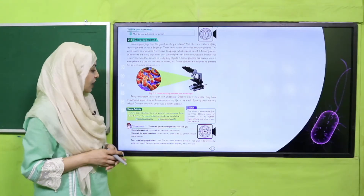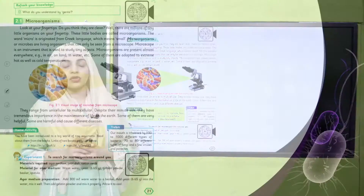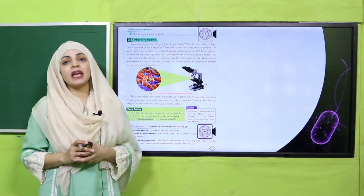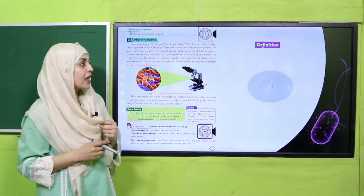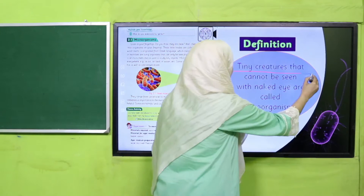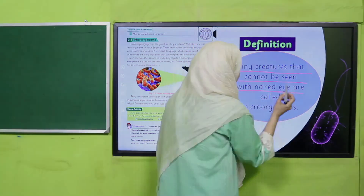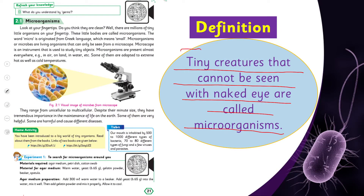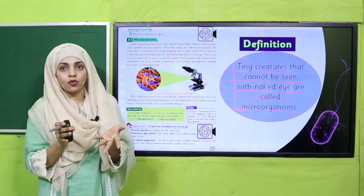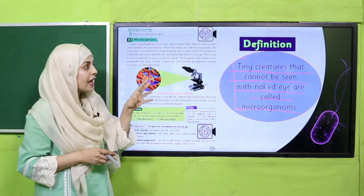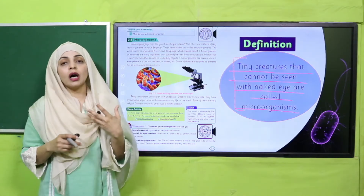My dear students, quickly open page number 21 in your science books. What are microorganisms? Let's define them: microorganisms are tiny creatures that cannot be seen with the naked eye. They are so tiny that you need a microscope to look at or observe them. Look at this definition carefully and understand it.